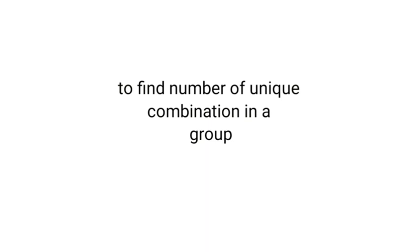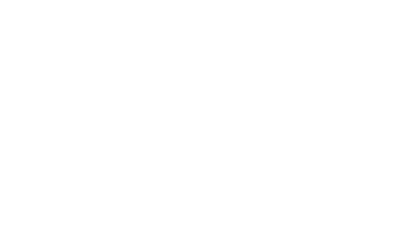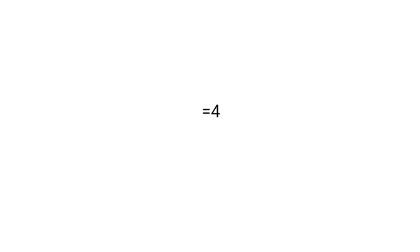The first equation is to find the number of unique combination groups. The equation is simple: number of letters minus one. For ABCDE with five letters, we do five minus one, which equals four groups. I'll prove that: the groups are AB group, AC group, AD group, and AE group — that is four unique combination groups.